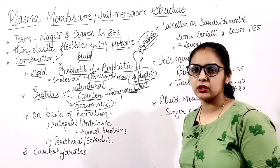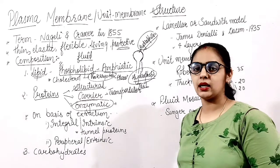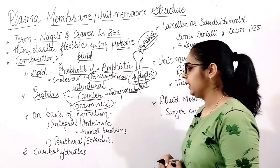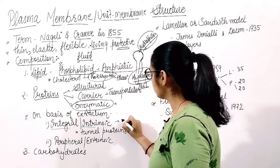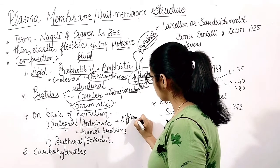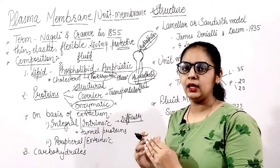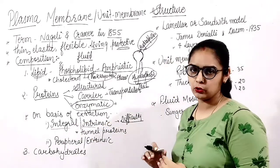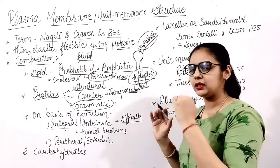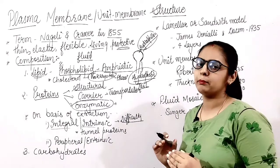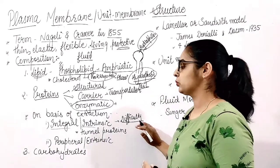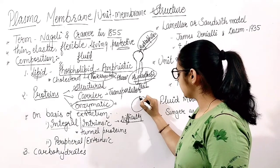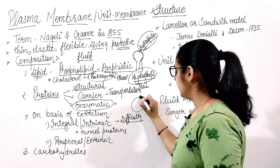On the basis of extraction — how easily we can remove proteins from the plasma membrane — we divide proteins into two parts. The first are integral or intrinsic proteins. These are very difficult to extract, and they are either completely or partially embedded in the plasma membrane.